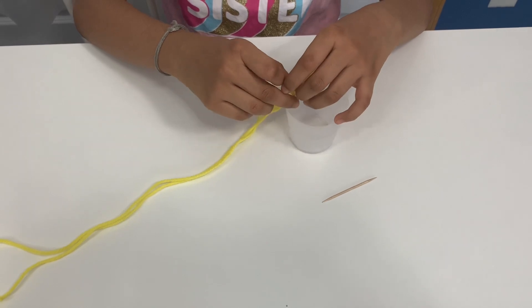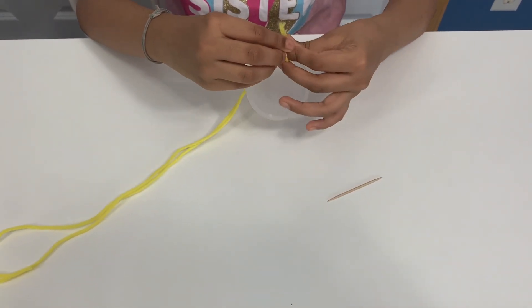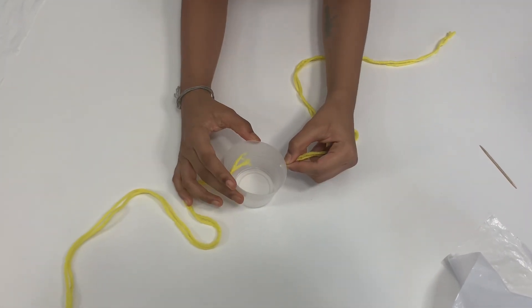Pull the strings through and then tie a knot. Do the same on both sides.